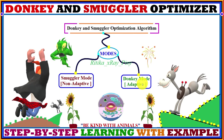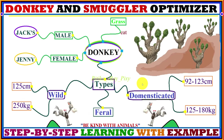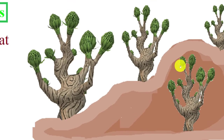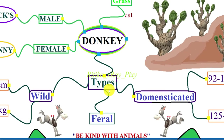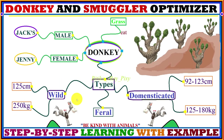In the donkey mode, we will try to understand the donkey's behavior in real life so that we can easily understand how this algorithm works. The donkey is a social animal. The male donkey is also known as a jack, and the female donkey is also known as a jenny or janet. They like to eat grass or desert plants. There are different types of donkeys: wild donkeys, feral donkeys, and domesticated donkeys. Wild donkeys are the largest.